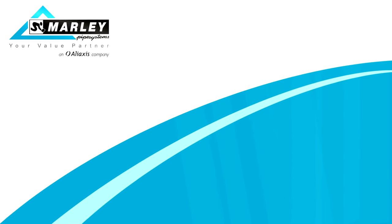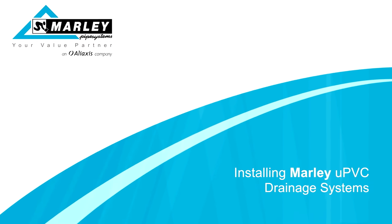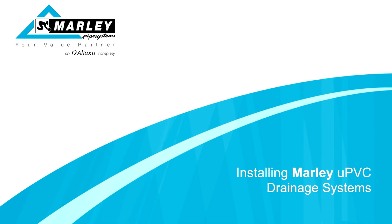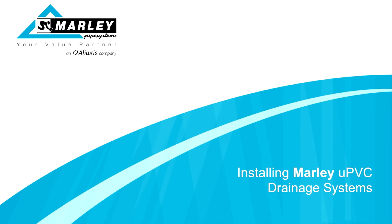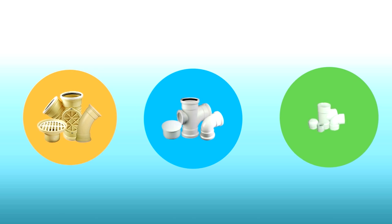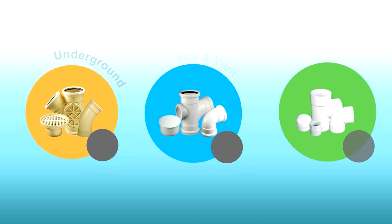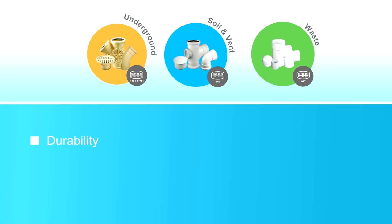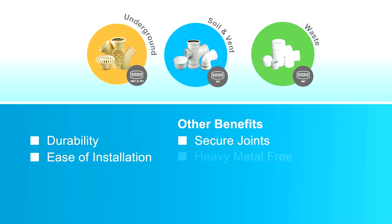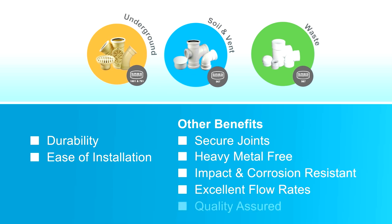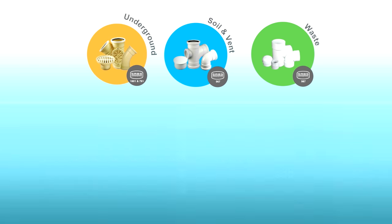For decades, Marley's sewer and drainage systems have provided plumbers and installers with a way to protect water quality and ensure effective sanitation in homes and buildings across sub-Saharan Africa. Durability, ease and safety of installation, as well as environmental soundness and cost-effectiveness are what make Marley's certified range of UPVC systems the preferred choice and offer a viable alternative to traditional materials.